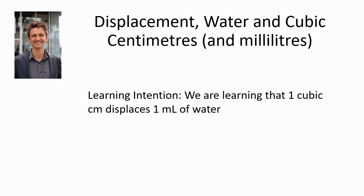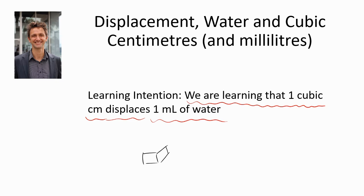Our learning intention is that we are learning that one cubic centimetre displaces or moves one millilitre of water. Here's a little tiny cubic centimetre, like those little wooden blocks you've probably seen, and it actually shifts exactly one millilitre of water. So if you put this in here, the water should go up by one millilitre.